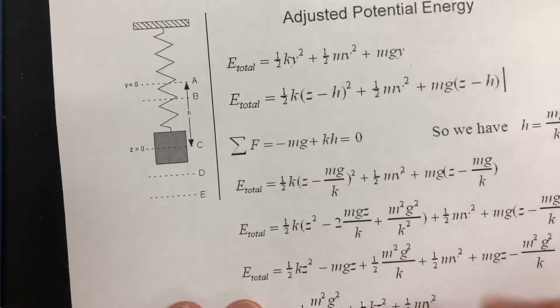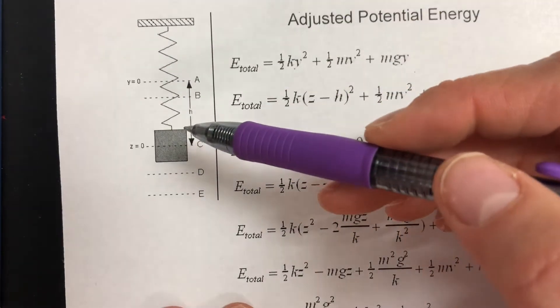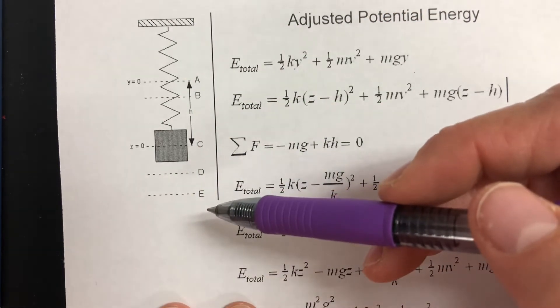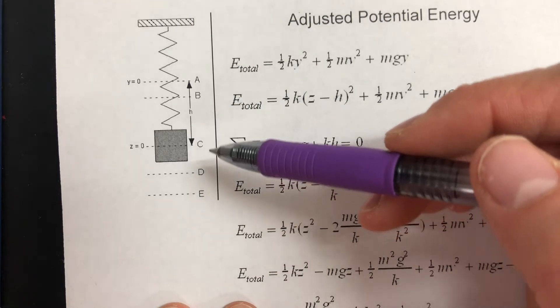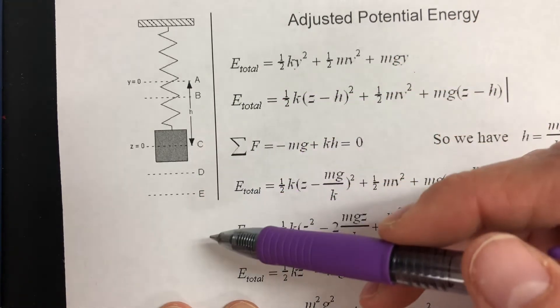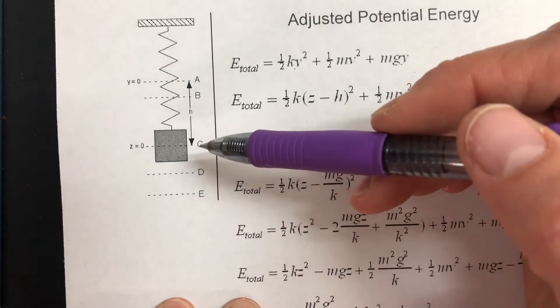So we are using the vertical system and we're using basically the spring to pull up and gravity to pull down. So when the mass is displaced upward, gravity is bringing it back to its equilibrium. When the mass is displaced downward, the spring is bringing it back to its equilibrium.